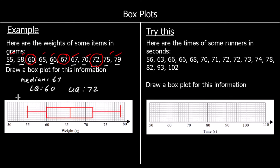So we've got the lowest value, the lower quartile, the median, the upper quartile, and the highest value. Here's one for you to draw. Work out the information that goes on the box plot and then draw it — or draw a sketch of it — if you're able to.